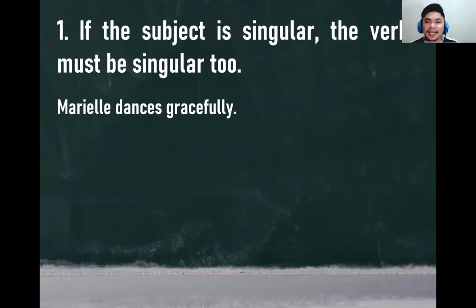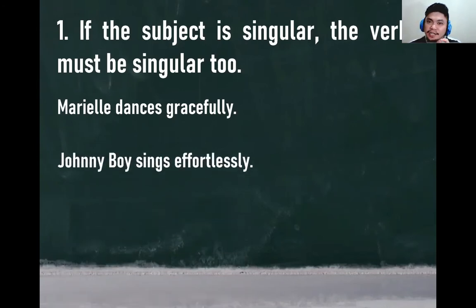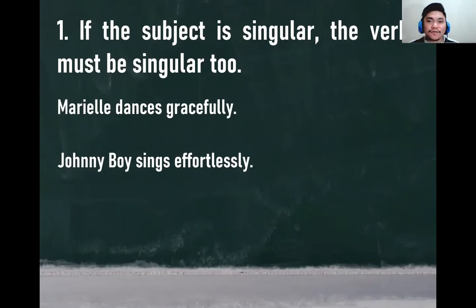Mariel is singular. When the subject is singular, the verb is also singular — what we call the S-form. When the subject is singular, it requires the S-form of the verb. Another example: 'Johnny boy sings effortlessly.' Johnny boy is singular, so it requires the S-form of the verb. These examples are correct.